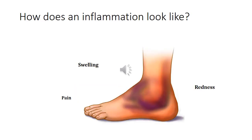How does an inflamed area look like? An inflamed area will be characterized by the presence of swelling in that particular region. There will be pain. It will be highly sensitive and there will be redness at that particular region. That is what characterizes inflammation.